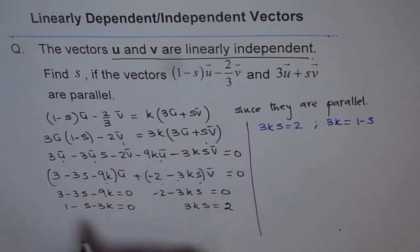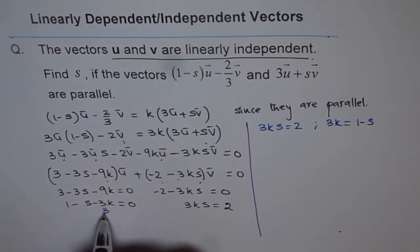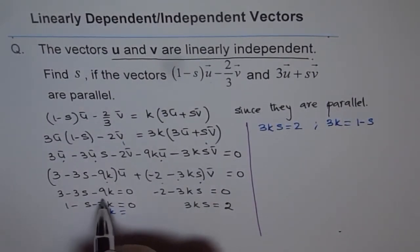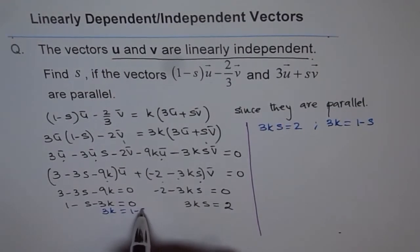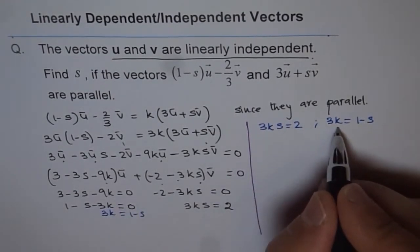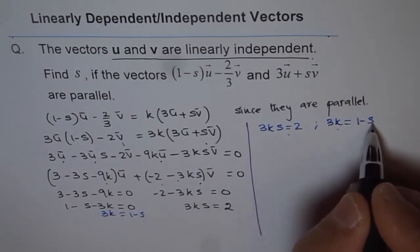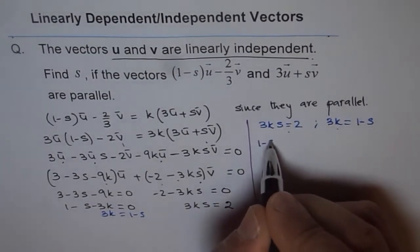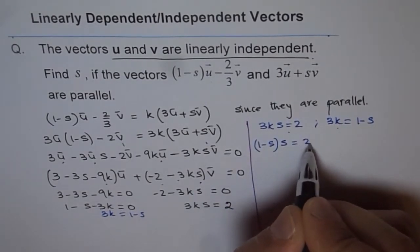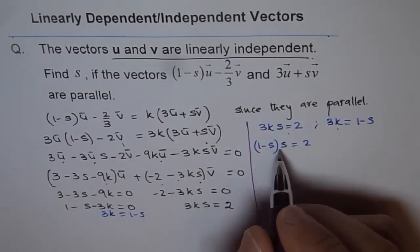So, from here, 3k equals to 1 - s. So, we are substituting this value here. So, 3k can be written as 1 - s. So, we have (1-s)s equals to 2. And that is a quadratic equation.